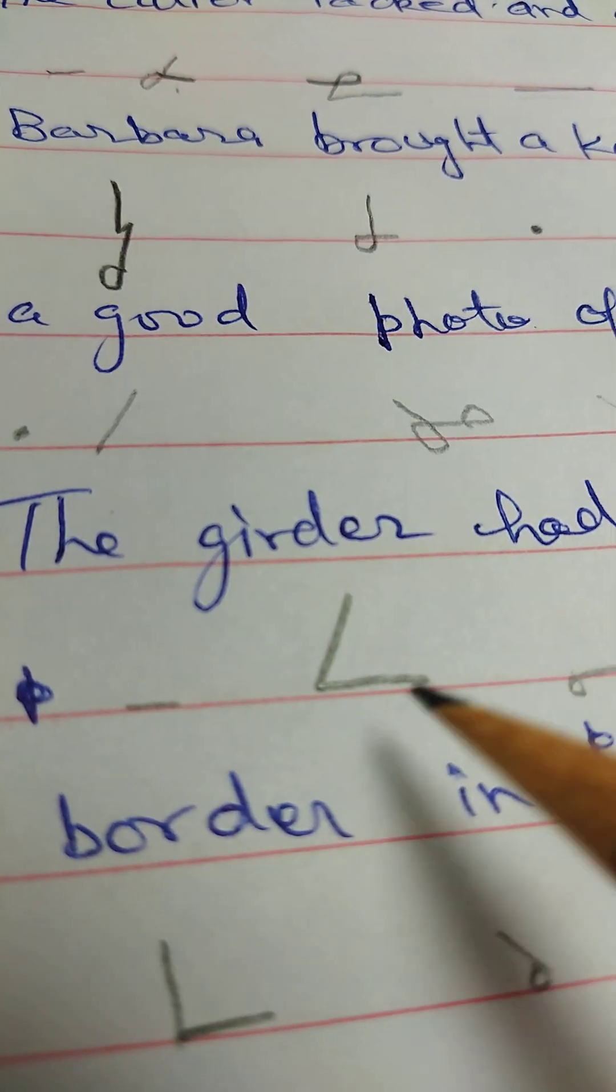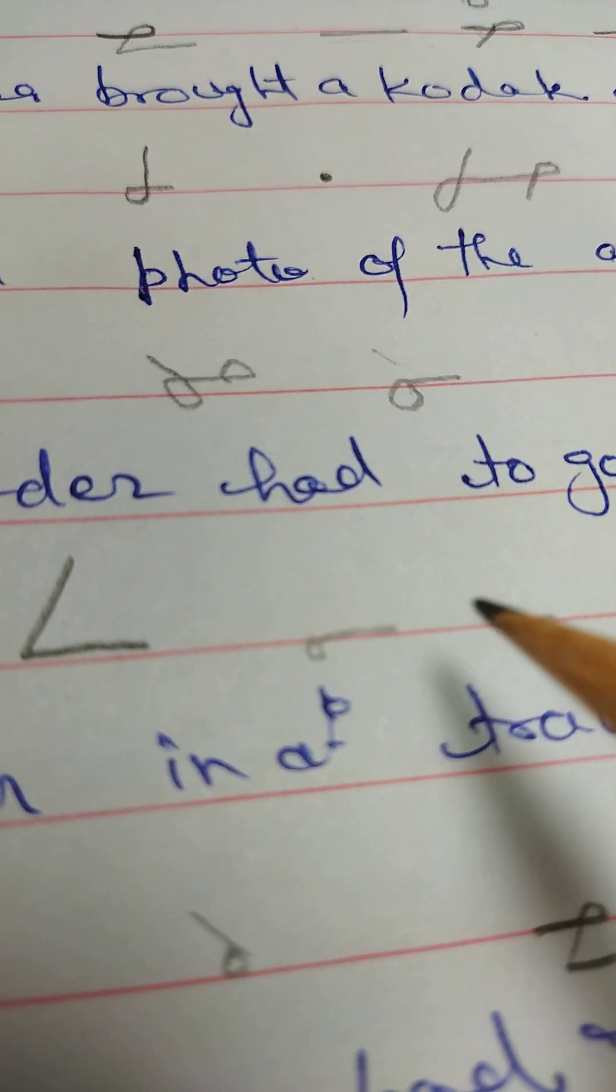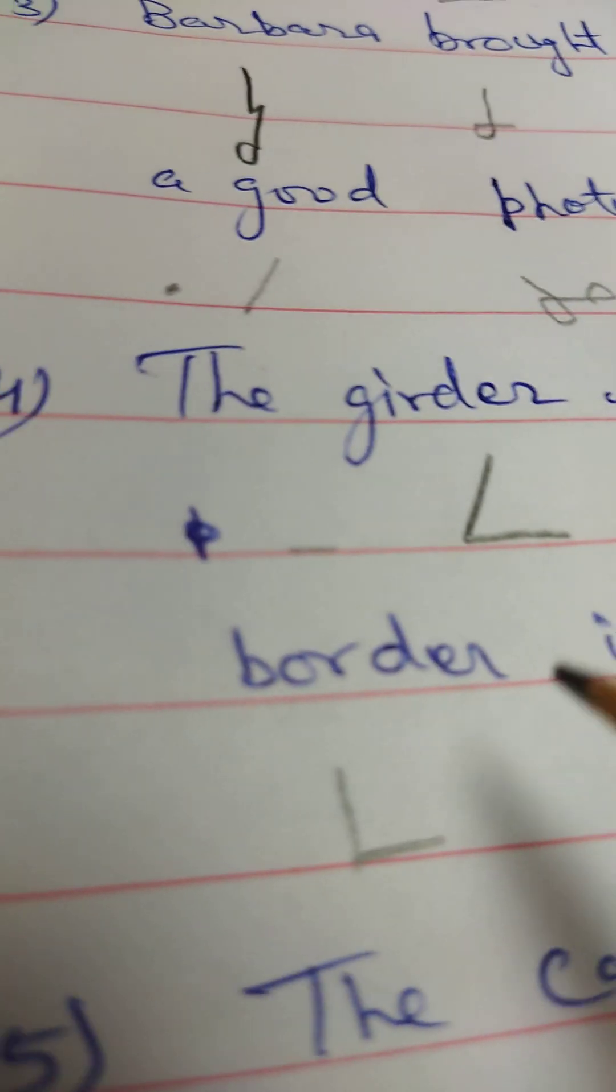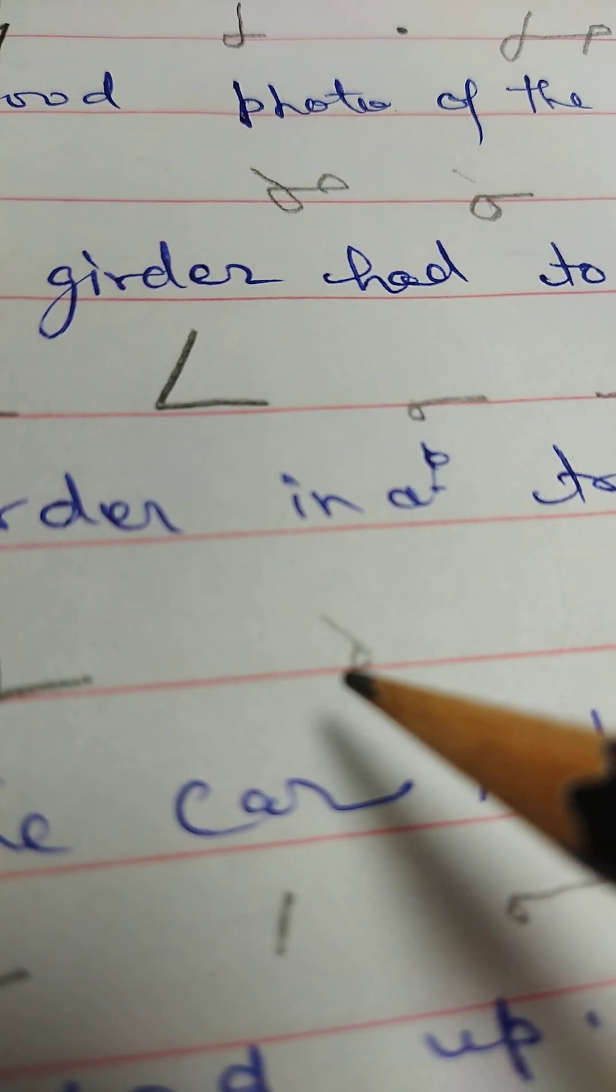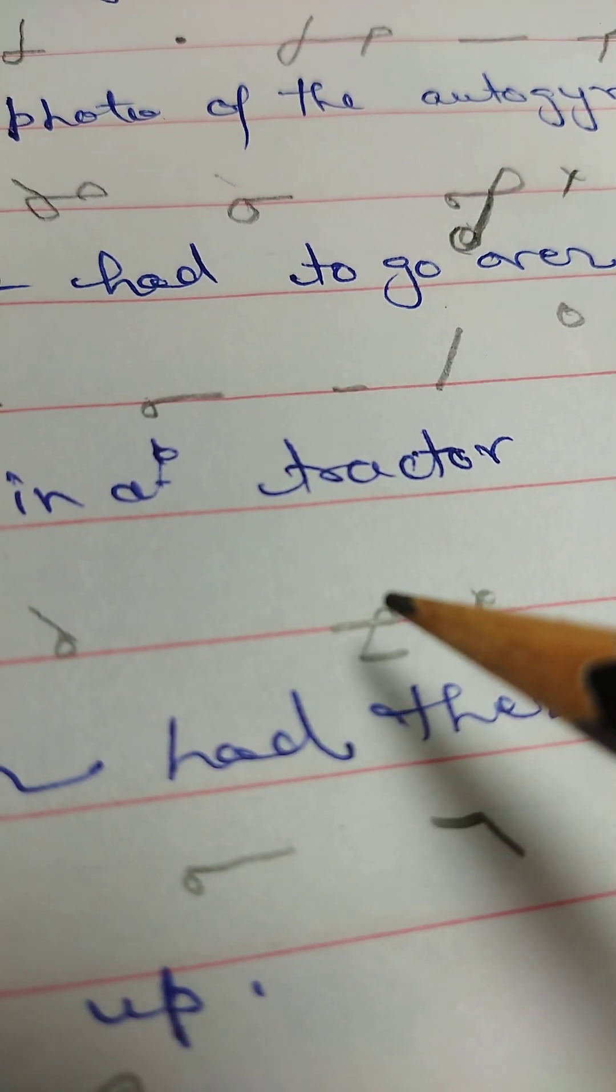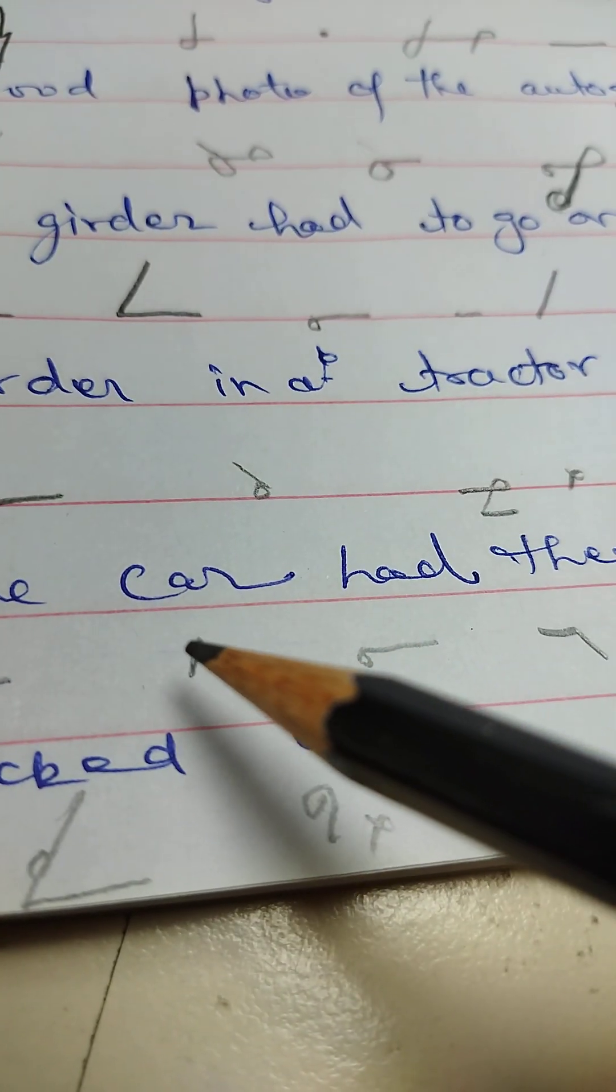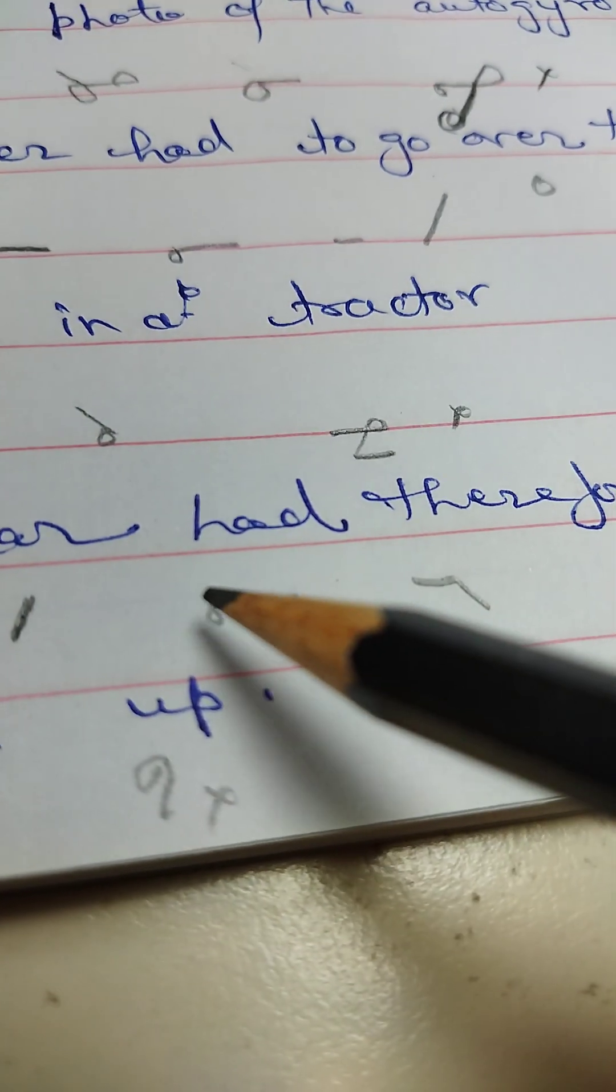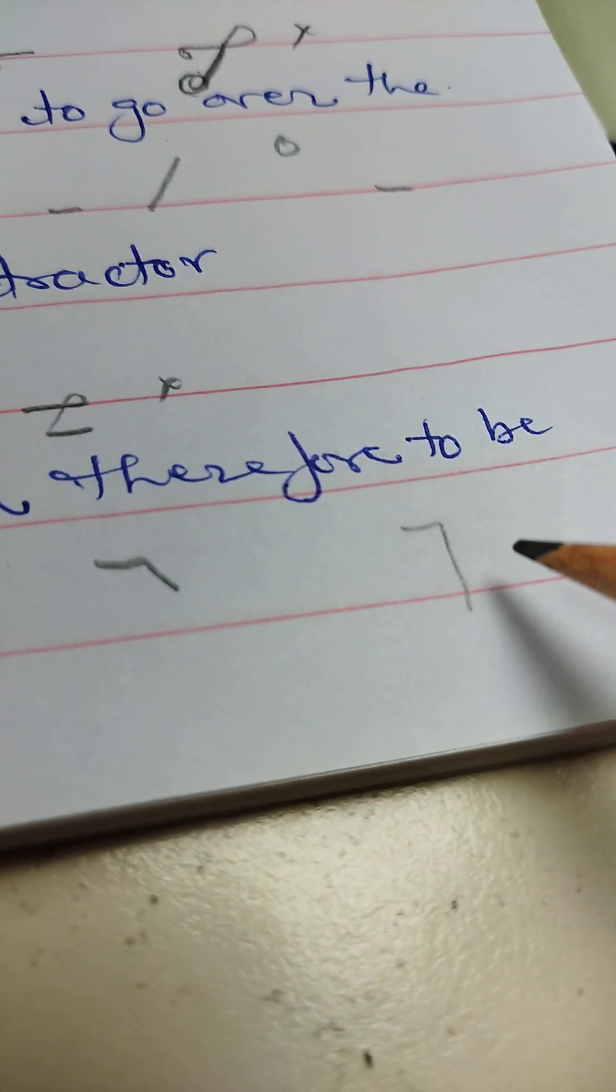The girder had to go over the border in a tractor. The car had to go over the border. Therefore, there is darkened, 4 is darkened, to be.